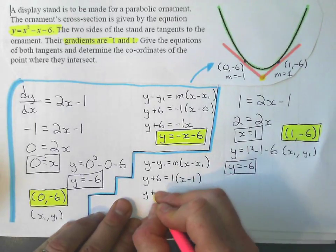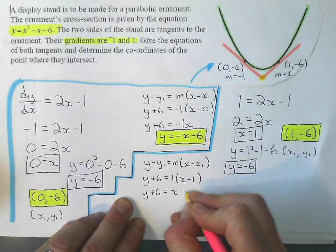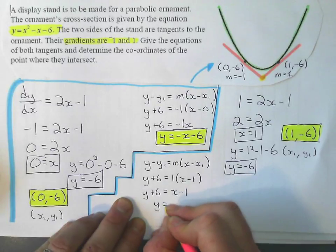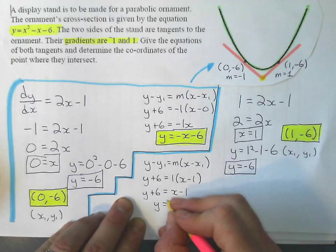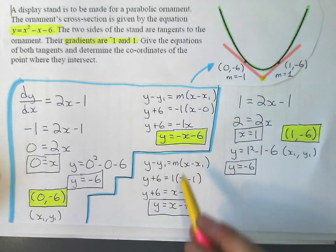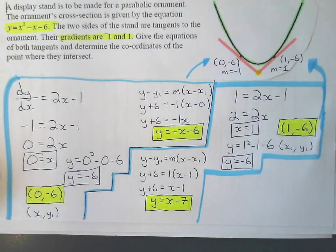Now distribute. Pretty easy to expand that through. Expanding 1 through means you don't do anything. And subtract the 6 from the other side. So I get y = x - 7. So I have found the two equations to the two tangent lines.